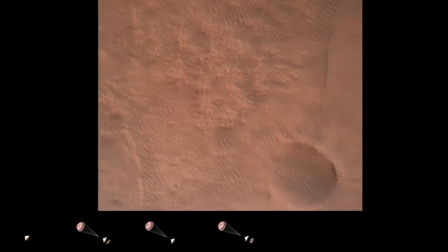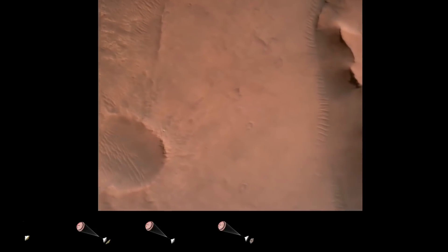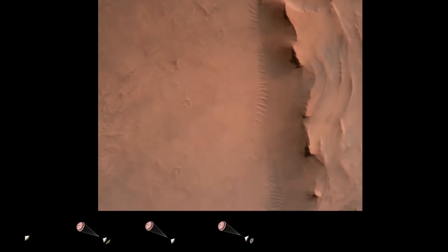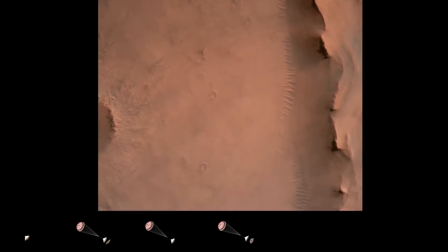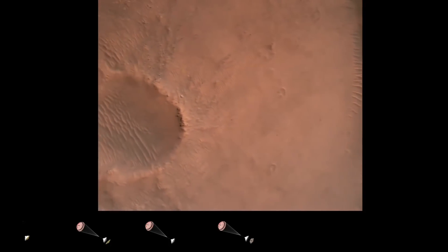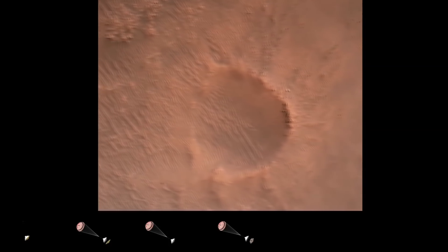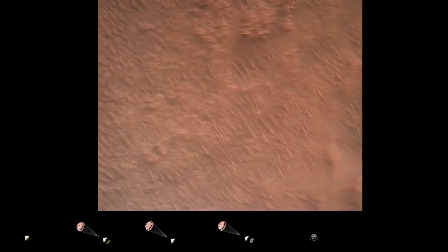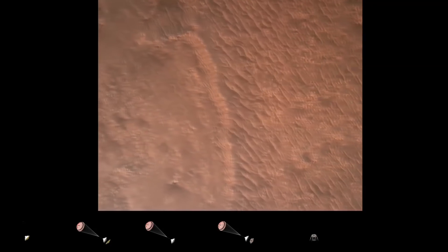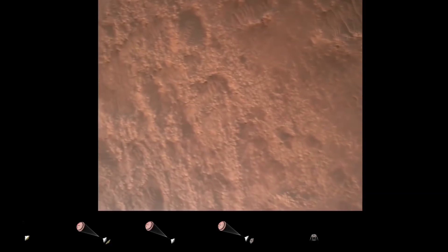Back shell separated. Current velocity is 83 meters per second at about 2.6 kilometers from the surface of Mars. We have confirmation that the back shell has separated. We are currently performing the divert maneuver. Current velocity is about 75 meters per second at an altitude of about a kilometer off the surface of Mars.